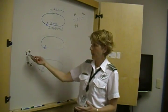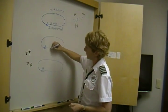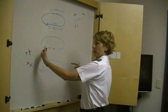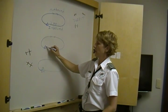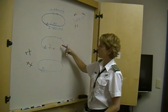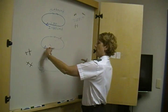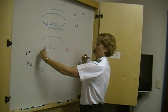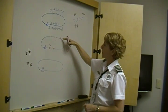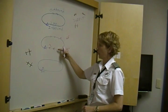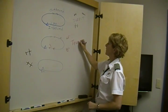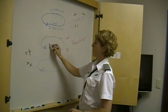Let's say we are coming from the southwest. With the holding pattern going in the standard right-hand direction, I need to figure out how to get established going the correct direction from this angle. The easiest way is, once I arrive at the fix, to make a 30-degree cut from my inbound course. For example, if the inbound direction was 90 degrees, I would fly 60 degrees for one minute. That puts me on the correct side of the holding pattern, and then I make a right-hand turn to become established on my inbound. We call this a teardrop entry.